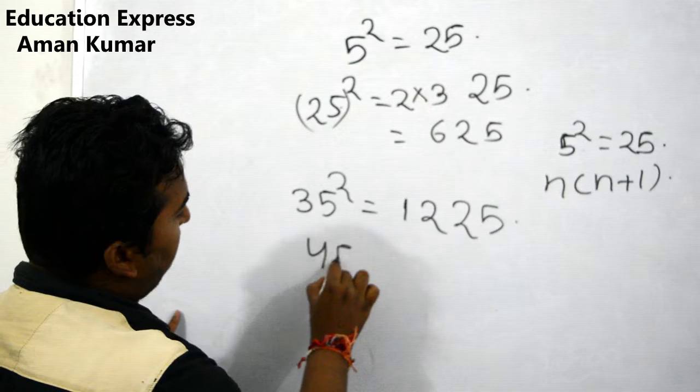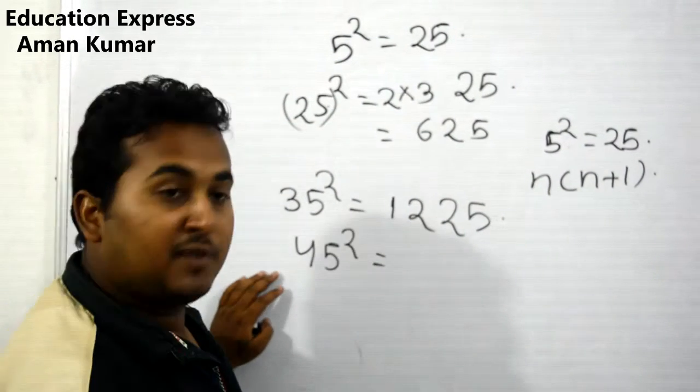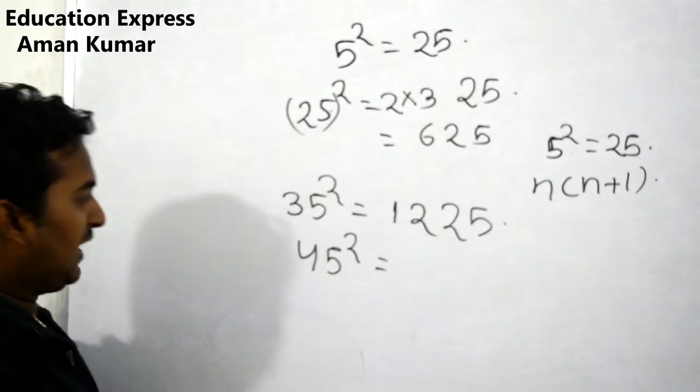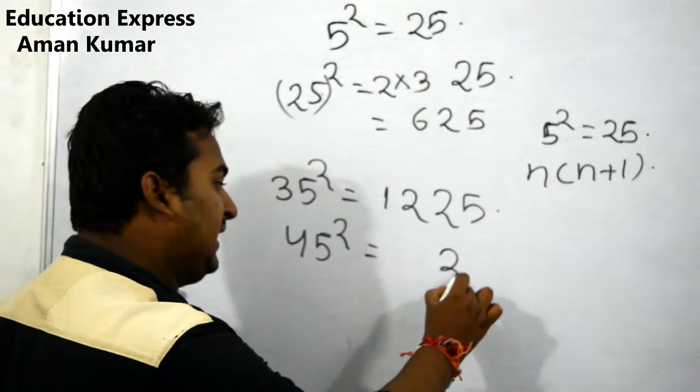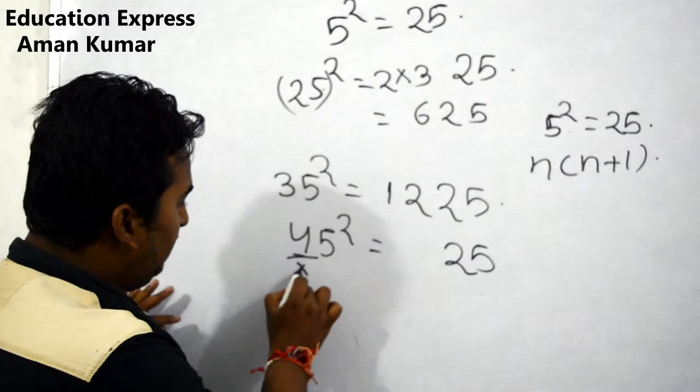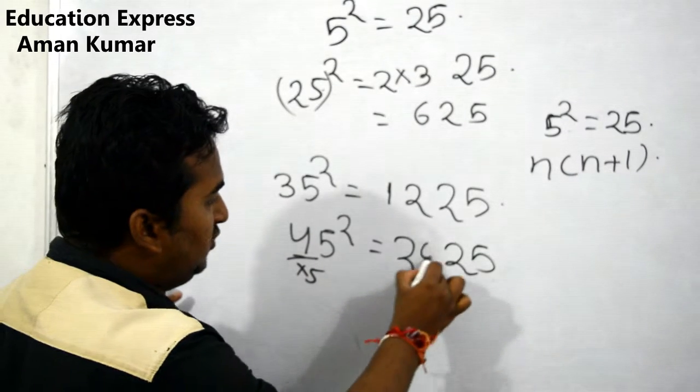45 squared: 5 squared is 25, 4 into 5 is 20, so 2025.